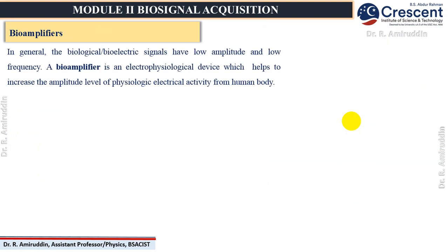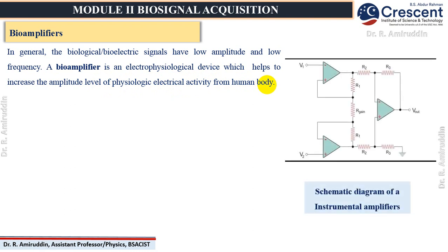Let us start discussing about the pre-amplifiers and signal processing stage — bio-amplifiers. All biological signals of our human body have low amplitude and low frequency. Hence, we are in need of bio-amplifiers, which is actually an electrophysiological device that helps to increase the amplitude level of any physiological electrical activity from the human body. A schematic diagram of instrumentation amplifiers is displayed here, where V1 and V2 are the inputs collected from the biological electrical signals, fed through a set of amplifiers to amplify the signals, and the output is displayed for the physician.